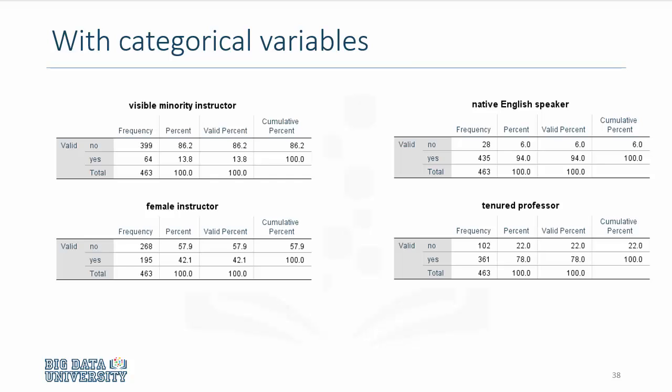So in that data set, if you want to know what percentage of professors were visible minority instructors, you can compute that. In this case, it's 13.8%. How many spoke English as their preferred language or were native speakers of English language? It's 94%.